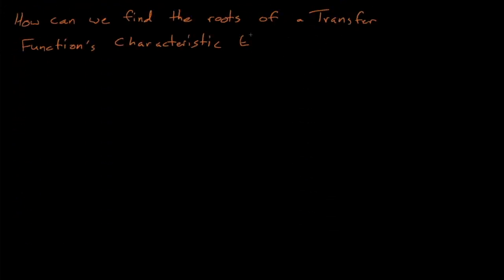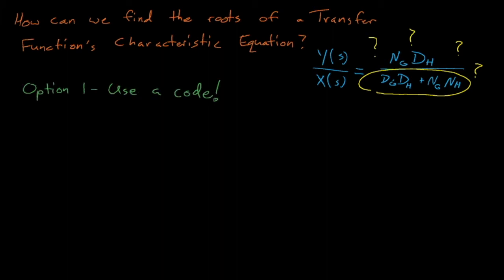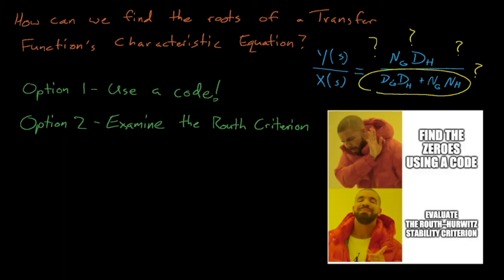So how can we know if a transfer function's characteristic equation contains any positive roots? Well, there are several options for doing this. First, we could employ some code such as MATLAB, Python, or C++ to directly solve for the roots of the characteristic equation, which is quite easy to do nowadays. While this is by far the easiest approach, we can actually gain some valuable understanding for our system's behavior by using some other, more historical, more complicated methods. One such method is to examine the Routh-Hurwitz criterion of the system's characteristic equation.